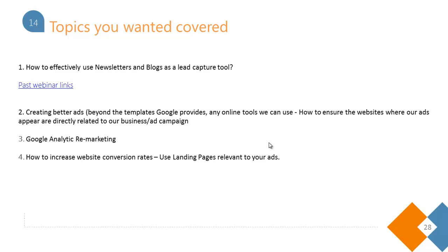Somebody wanted to know about Google Analytics and G-Marketing — that's a pretty broad topic, so we can cover it in another webinar. Regarding how to increase website conversion rates: the very first basic step is to use landing pages instead of redirecting traffic to your website. Use landing pages that are very specific and relevant to the kind of ad you have created. The ad image and landing page should be very similar to each other so people who click the ad complete the action.